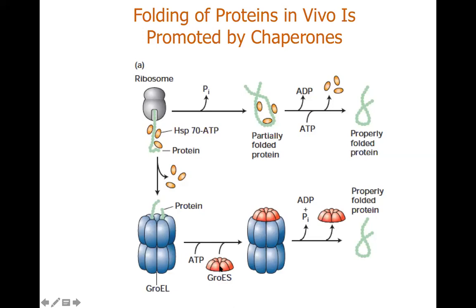When GroES and ATP are attached to the barrel-shaped structure, contraction of the internal lining brings the synthesized polypeptide chain into close contact with the hydrophobic residues. Hydrophobic interactions form between the hydrophobic amino acids of the GroEL internal lining and the hydrophobic residues of the nascent polypeptide chain, driving proper folding. Upon ATP hydrolysis, the barrel-shaped structure expands, GroEL detaches, the inlet opens again, and the correctly folded protein exits from the GroEL structure.